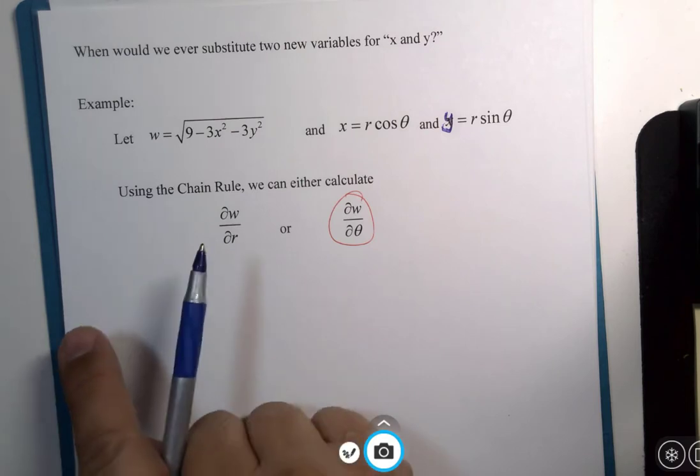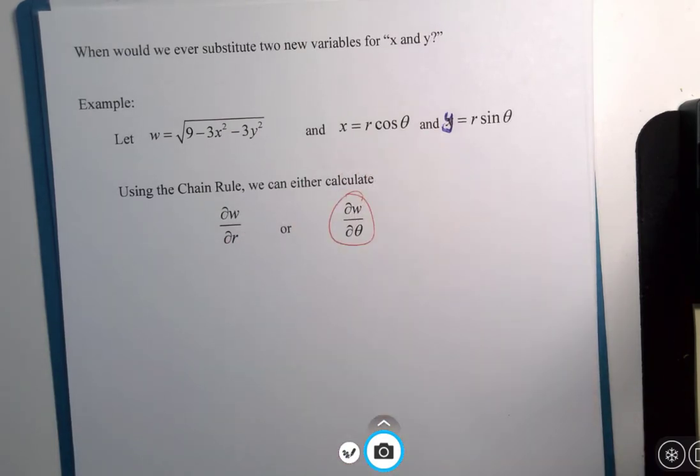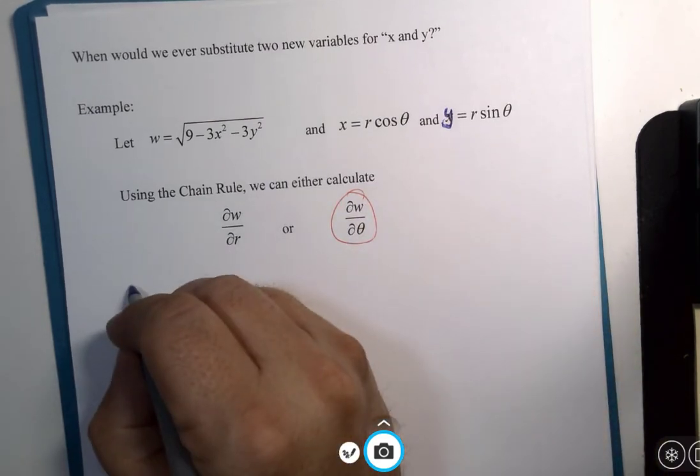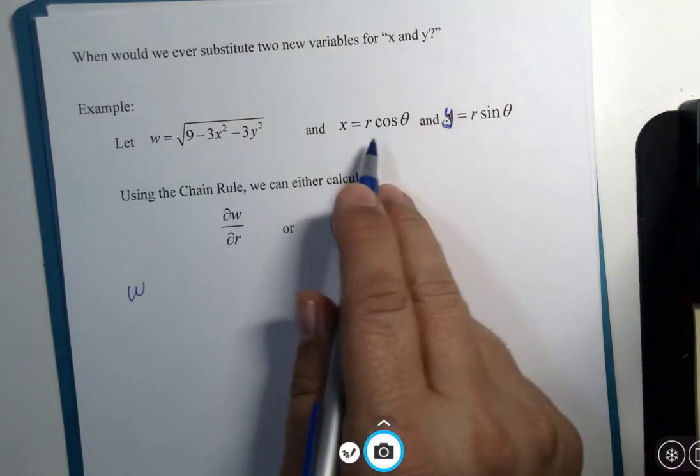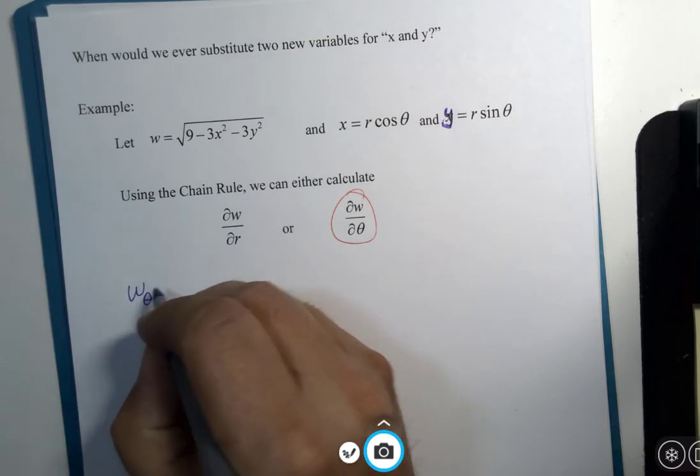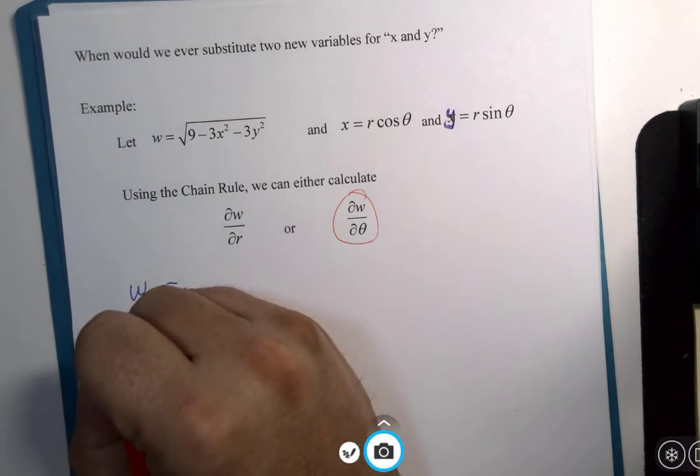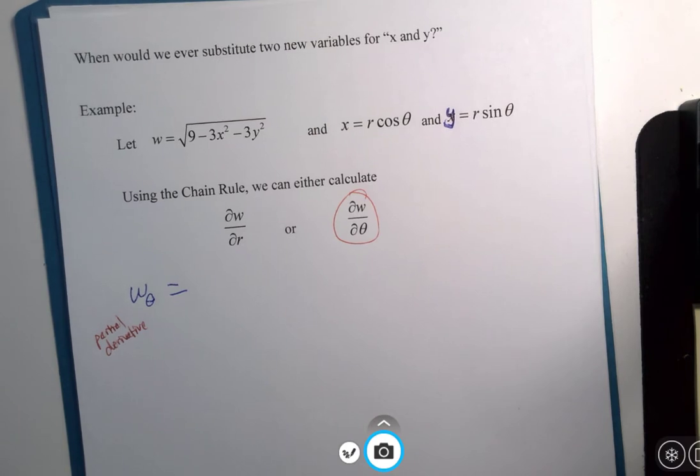Now I didn't rewrite the formula again here because I made alphabet soup and there's all sorts of new variables happening. But the formula would look like this: the partial of w after we've replaced all x and y with r's and theta's, the partial with respect to theta. And I really feel like I need to write that down. This is a partial derivative.